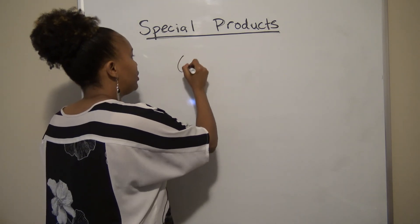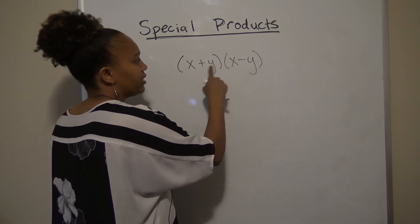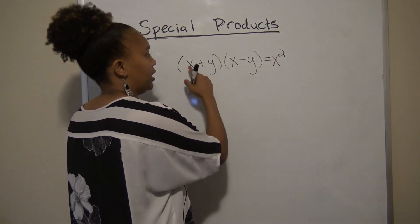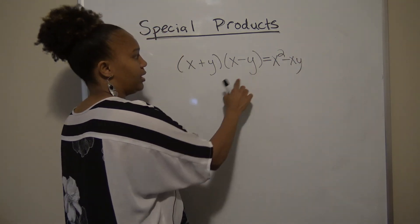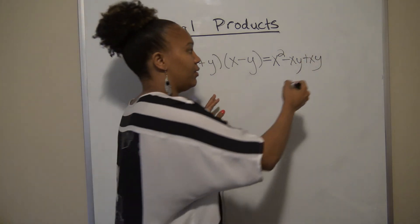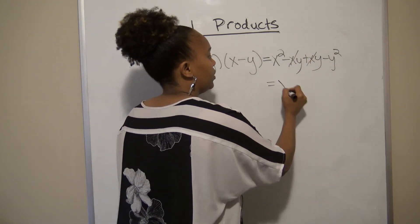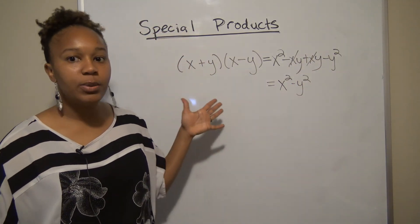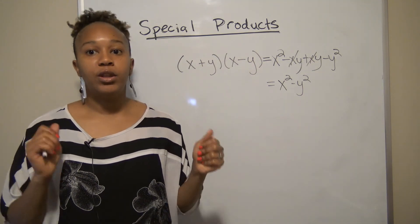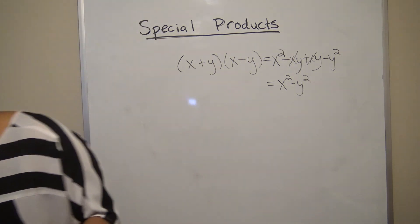Our next special product is when we're multiplying two binomials where both terms are the same except one has a plus and one has a minus. When you multiply (x + y)(x − y) you get x² − xy + xy − y², and the middle terms cancel, leaving x² − y². So the result is the first term squared minus the second term squared.